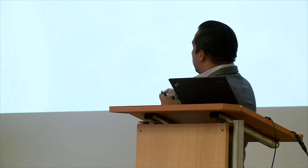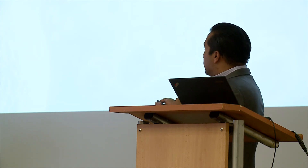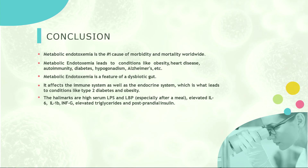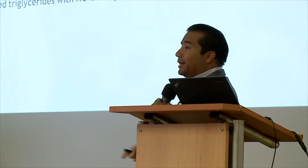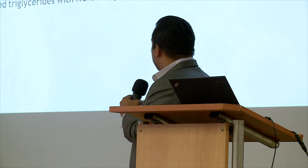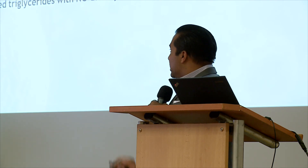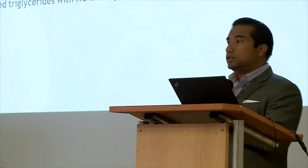It affects the immune system as well as the endocrine system in conditions leading to type 2 diabetes and obesity. The hallmarks are increased serum LPS and LBP, and elevated levels of interleukin-6, interleukin-1-beta, interferon-gamma, triglycerides, and disruptive postprandial insulin — characteristic features of numerous chronic illnesses as well. The spore-based product reduced postprandial endotoxemia and all the key associated cytokines including interleukin-6, interleukin-1-beta, and even elevated triglycerides, with no dietary changes or interventions at all.